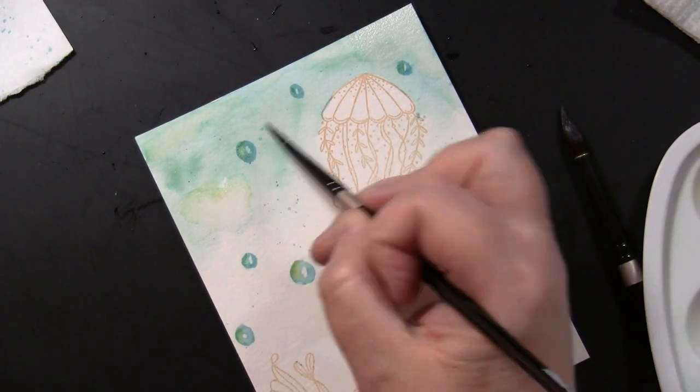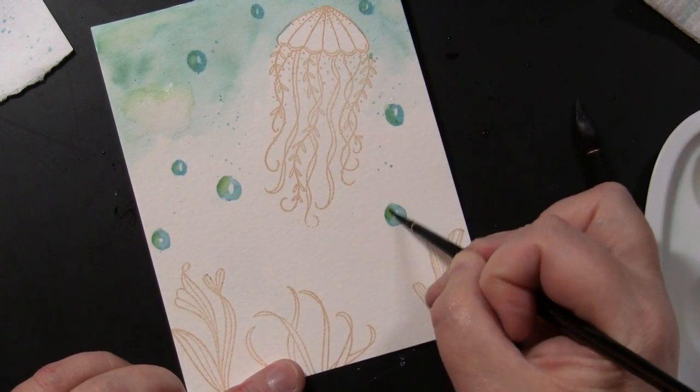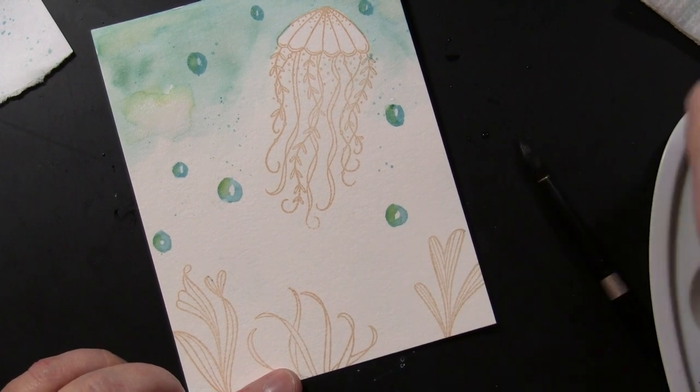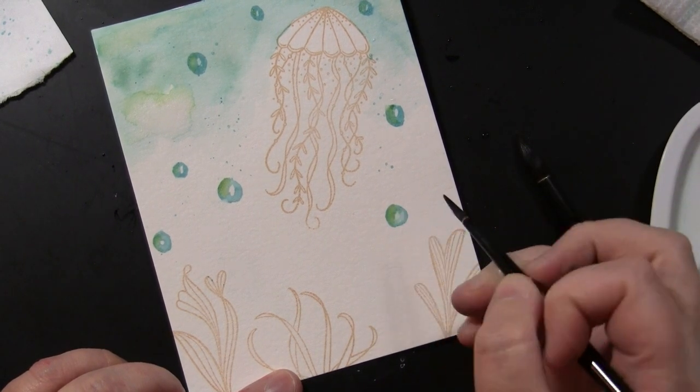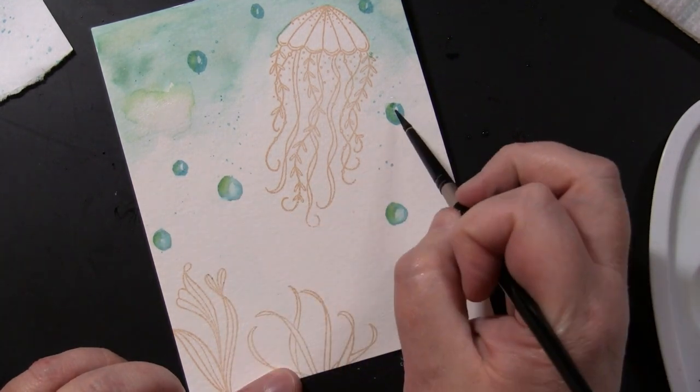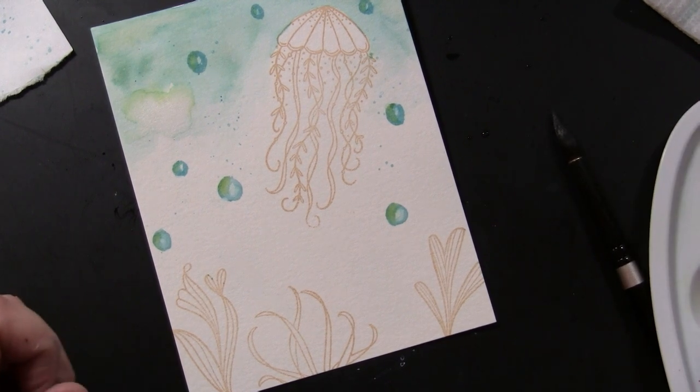And then I can always go back with just water or even rinse off my brush and pat it dry on the napkin there and lift up some of the color with a thirsty brush, which is just a brush that's pretty dry that can sort of soak up some of the wet paint or water that's on your page.